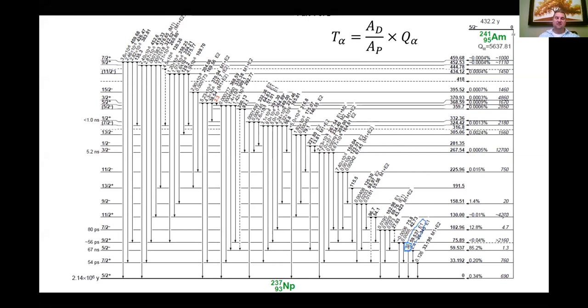From this level diagram, you can see that you would expect to see a good number of 59.5 keV gamma rays from the alpha decay of americium-241. The other thing you can notice is that as you look at all of these other intensity numbers, many of them have exponents of times 10 to the negative fifth.